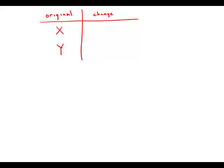The price per share of stock X increased by 10% over the same time period that the price per share of stock Y decreased by 10%. So hold on, let's just look at that for a second.